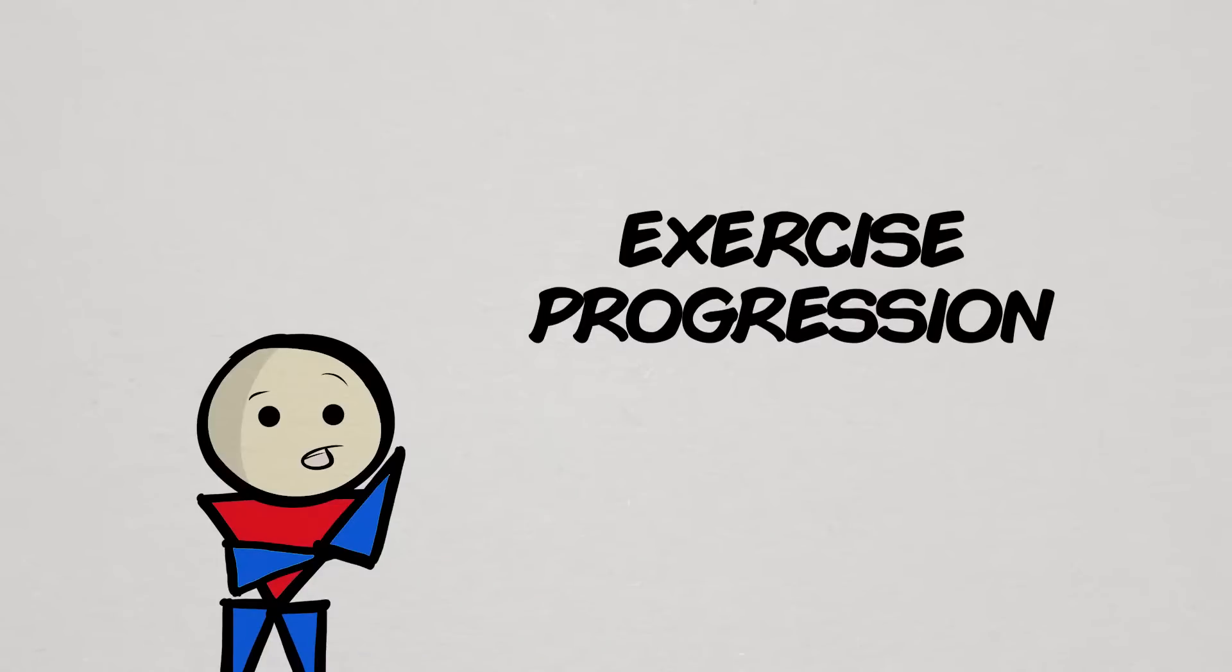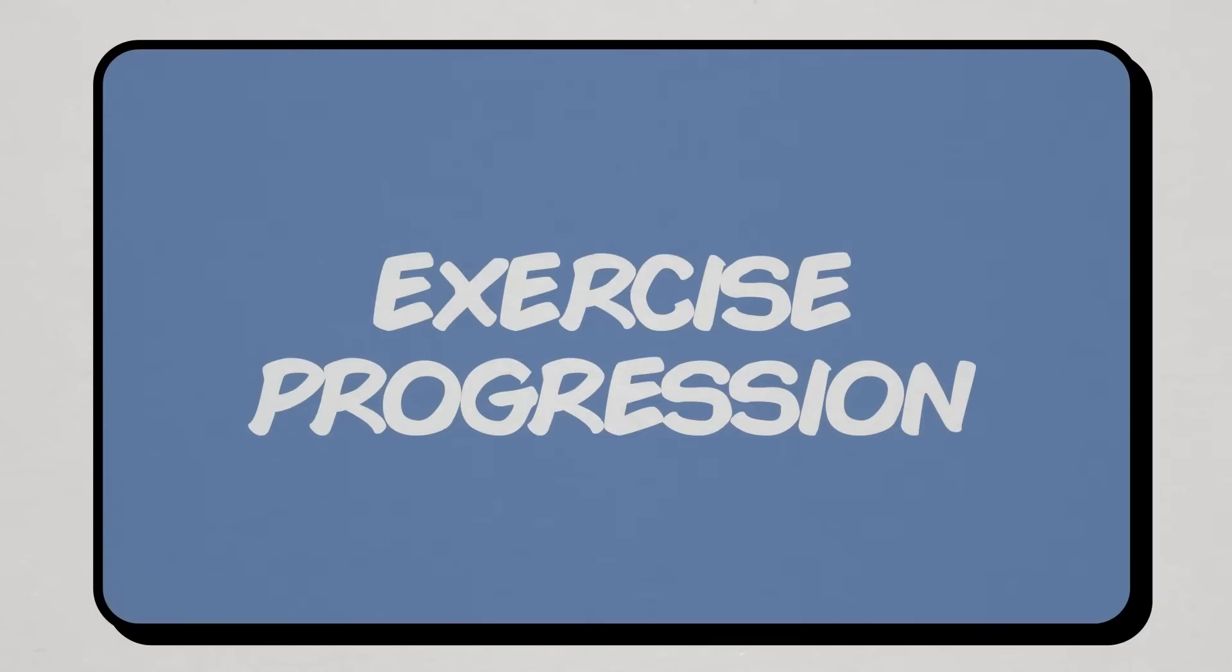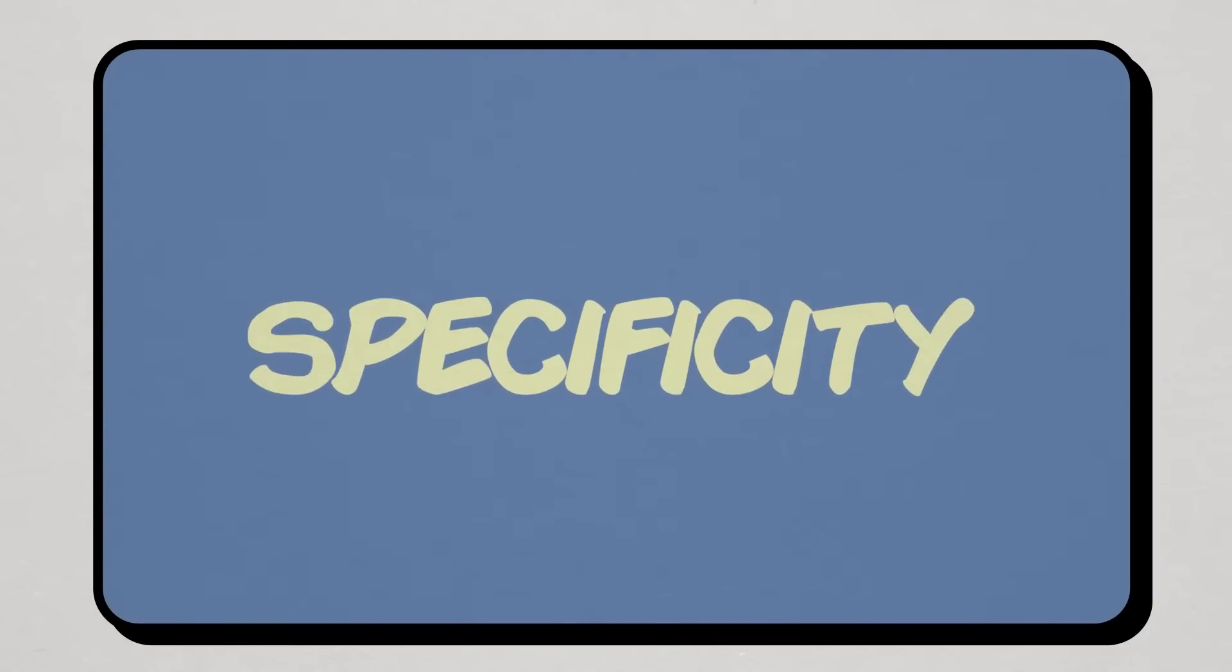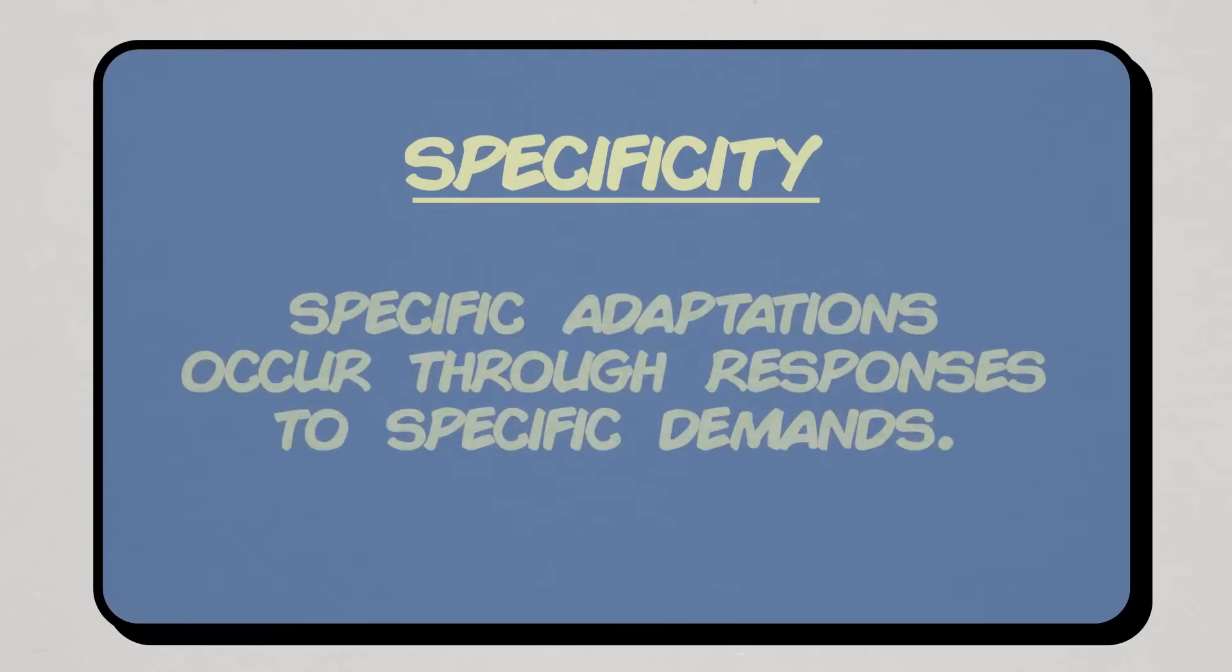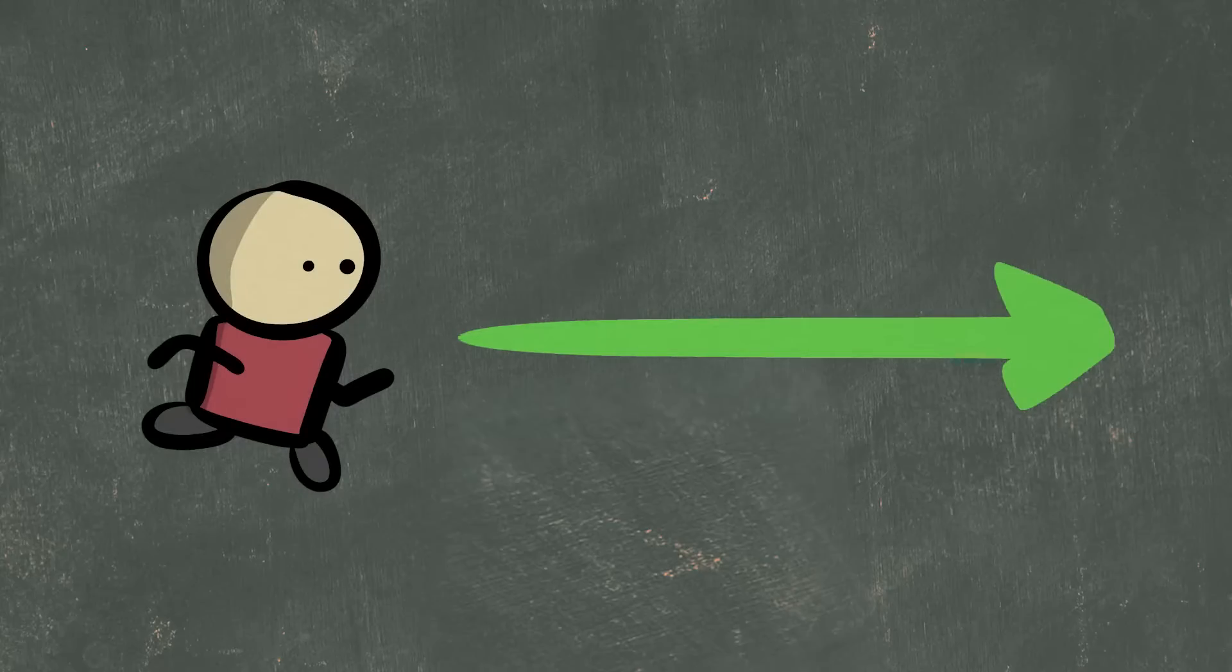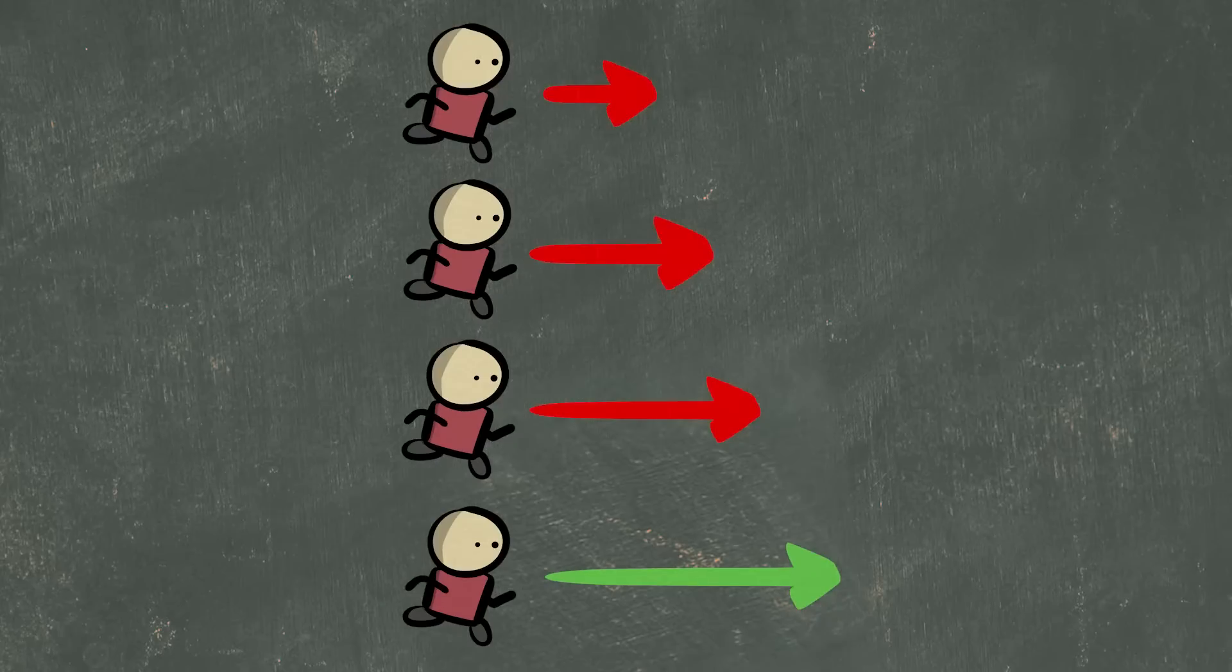When it comes to exercise progression of any kind, we do so by following a principle known as specificity. Specificity, in short, means to improve a specific task, you need to perform the specific task. For example, if you want to run farther, then you have to run more and more distances over time.